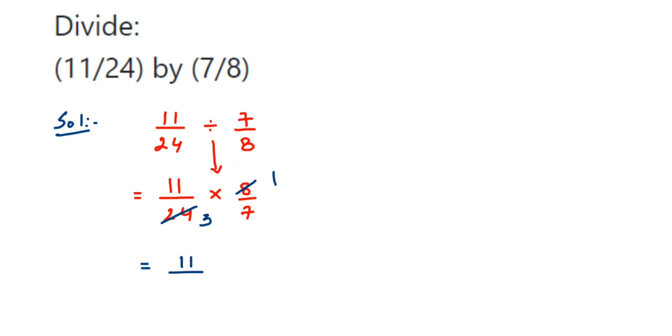And in the denominator I have 3 and 7, so 3 sevens are 21. So 21, that's it.